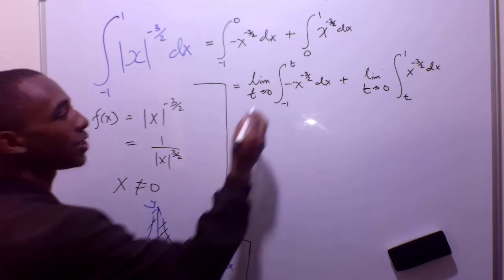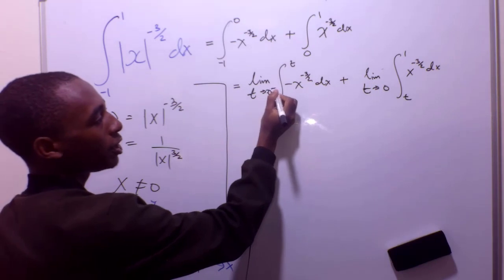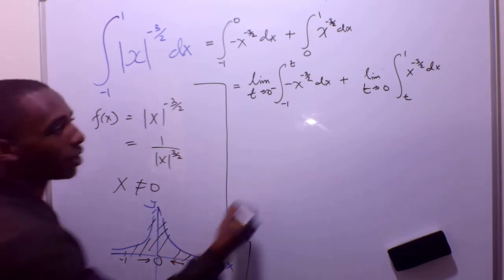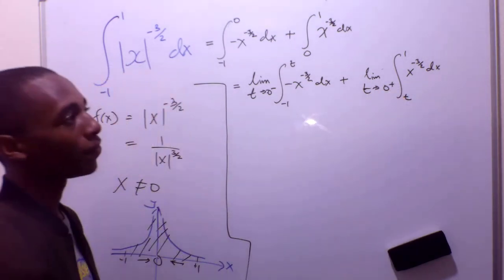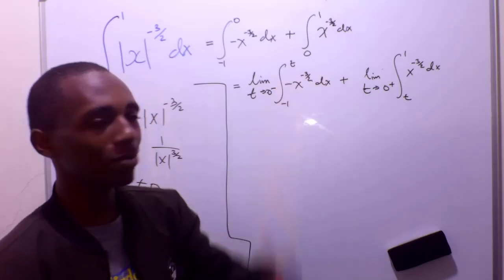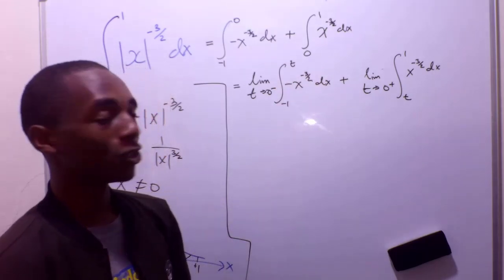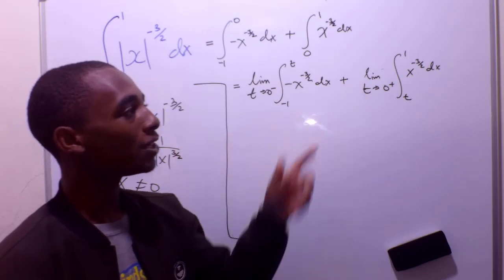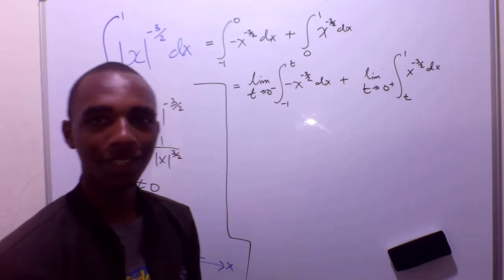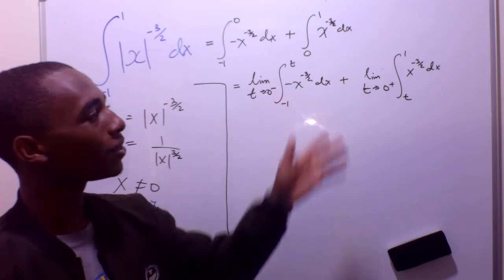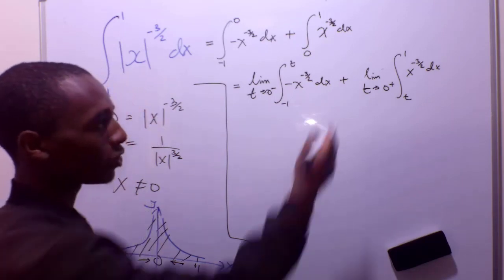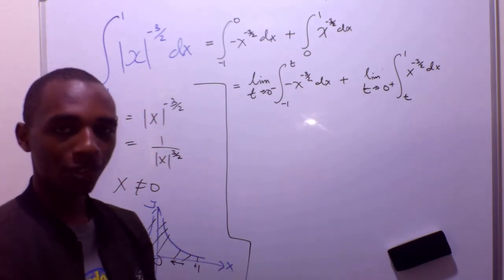I should say this is the limit as we approach t from the negative side, and then the limit as we approach t from the positive side. For this integral to exist, each of these limits must exist and be finite. If one of these limits diverges, then we say the whole integral diverges. So let's choose one of these and see if it converges or diverges.